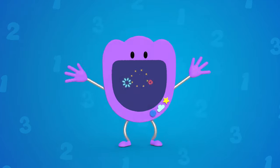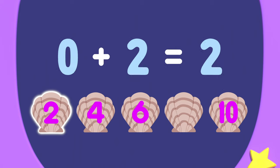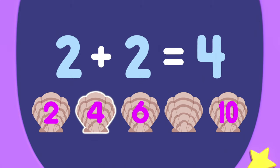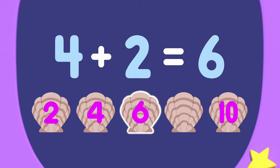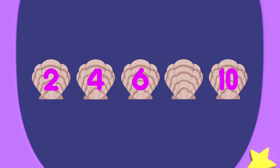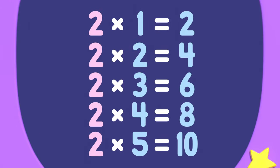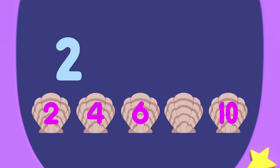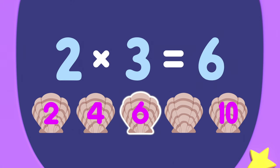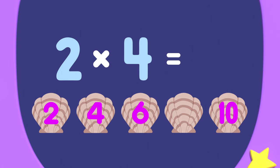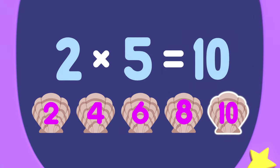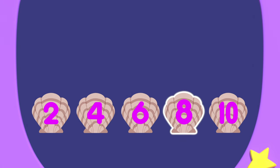In a row: zero. Zero add 2 is 2. 2 add 2 is 4. 4 add 2 is 6. These numbers are all multiples of 2. A multiple of 2 means it is a number in the 2 times table: 2, 4, 6, 8, 10. We are adding 2 each time. 2 times 2 is 4. 2 times 3 is 6. 2 times 4 is 8. And 2 times 5 is 10. So 8 is the missing number.